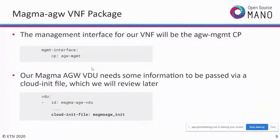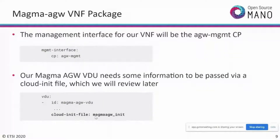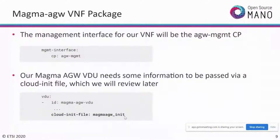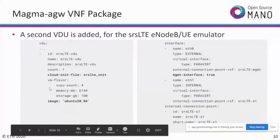The cloud config file can be found in the Magma directory under the cloud-init subdirectory, as a file named magma-access-gateway-init. This is the content used for day-zero operations. For the second VDU — the SRS-LTE emulator — you'll find a similar section with VM flavor and image name. This VDU has two interfaces: one external for management, and one internal for VDU-to-VDU connectivity.